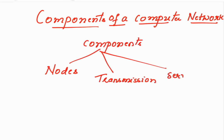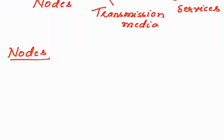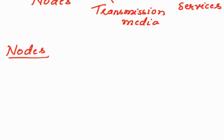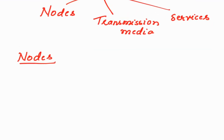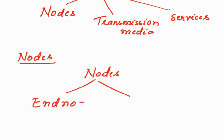I am classifying the different components of a computer network into three: the first one is nodes, the second one is transmission media, and the third one is services. The components in the network we call nodes can be classified into two types: end nodes and intermediate nodes.